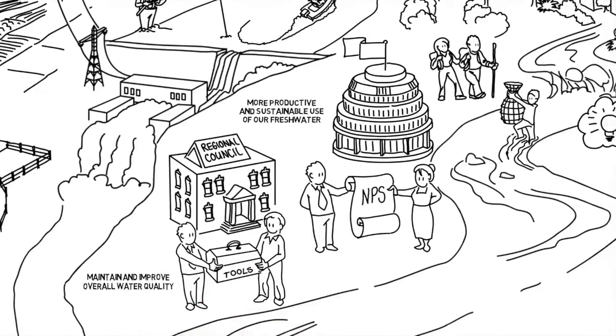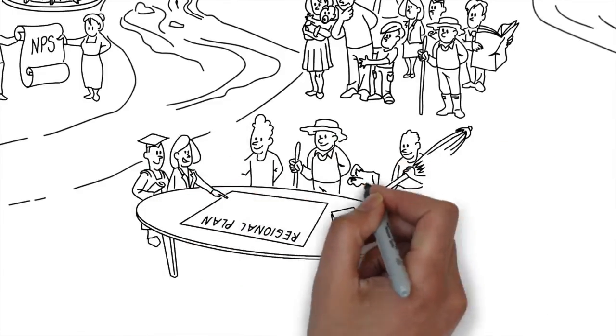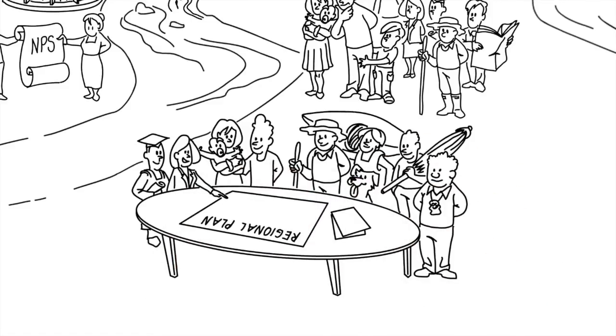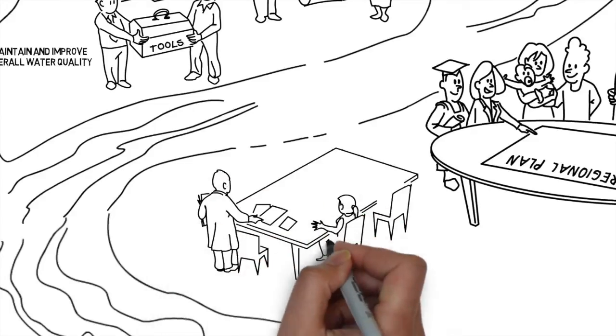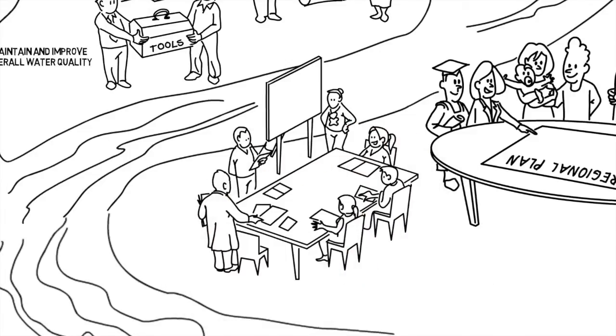The government is making changes so you and your council can work together to resolve up front what you want from your water resources and then put that in the regional plan. The government is working with scientists, iwi and water users on a national framework to help councils and communities ensure your fresh water is available for the uses and values that are important to you.